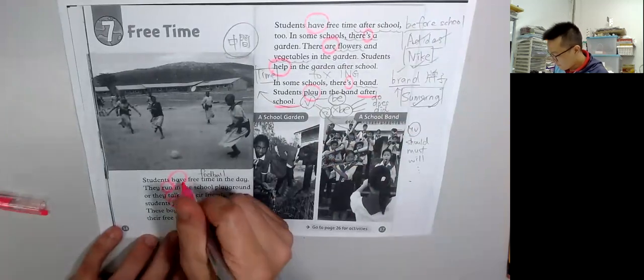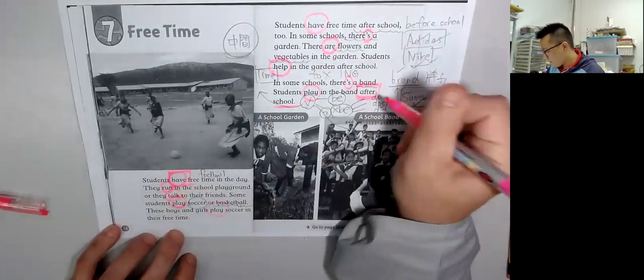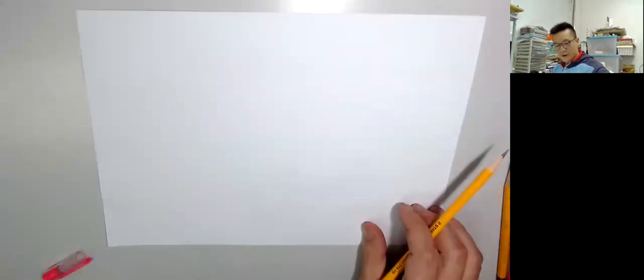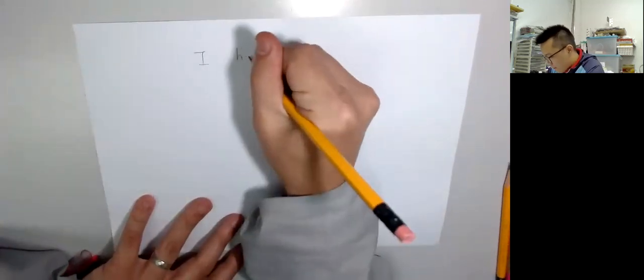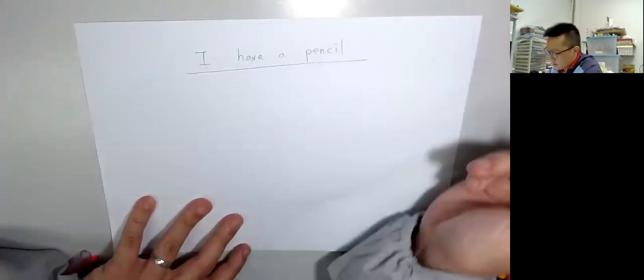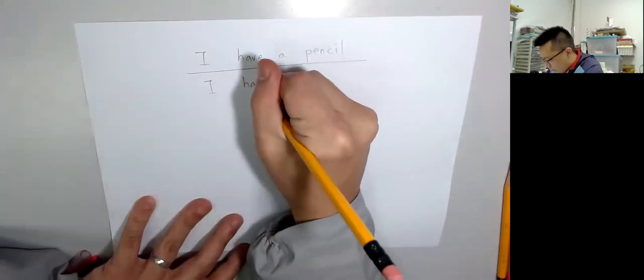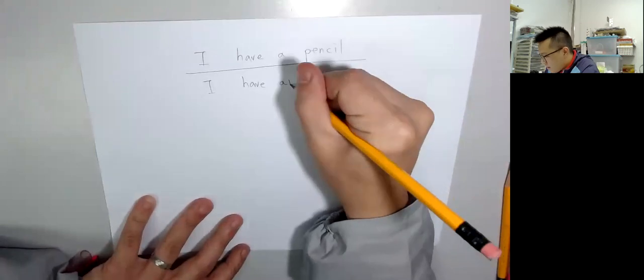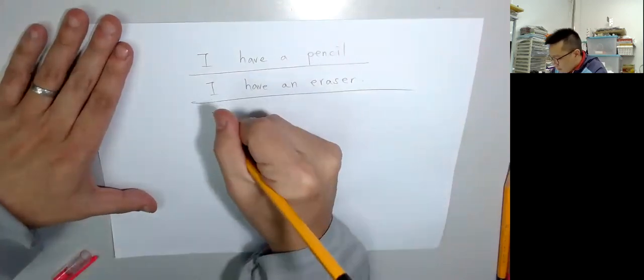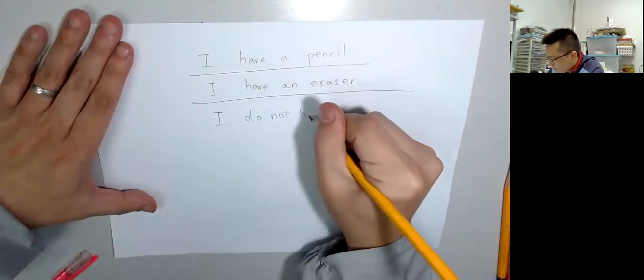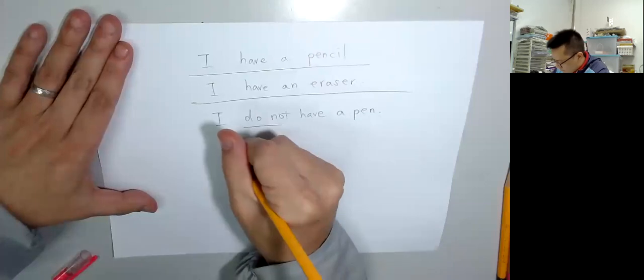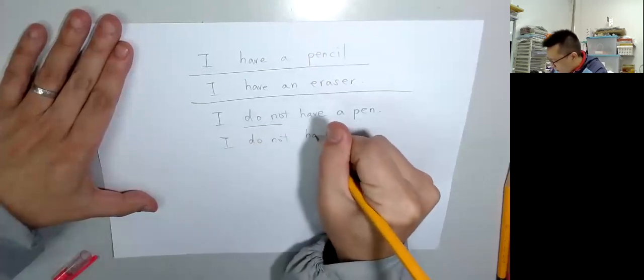Today's key sentence structures I want to say: have, after. When you understand have: I have a pencil. I have an eraser. I do not - this is the verb category. I do not have a pen. I do not have a car.